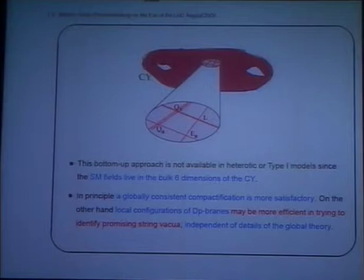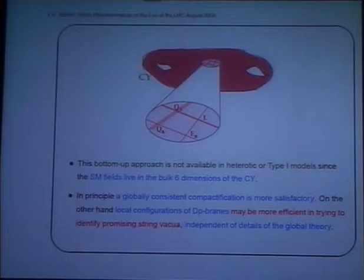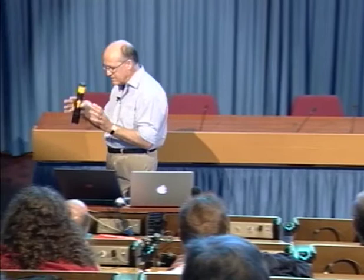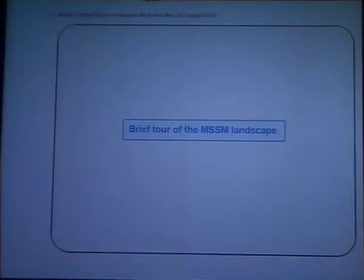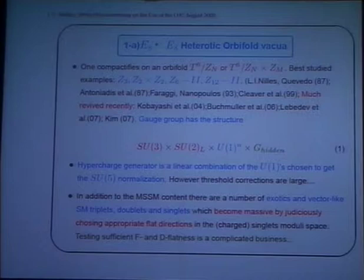There is, in fact, a stronger version of this local way of constructing models, which is insisting that the local physics — your standard model group — decouples from gravity. So you can take the large volume limit and still maintain your physics of the standard model totally decoupled from gravity, which is what is considered in the case of models of D-branes at singularities and F-theory models. Let me make a brief tour of the MSSM landscape.